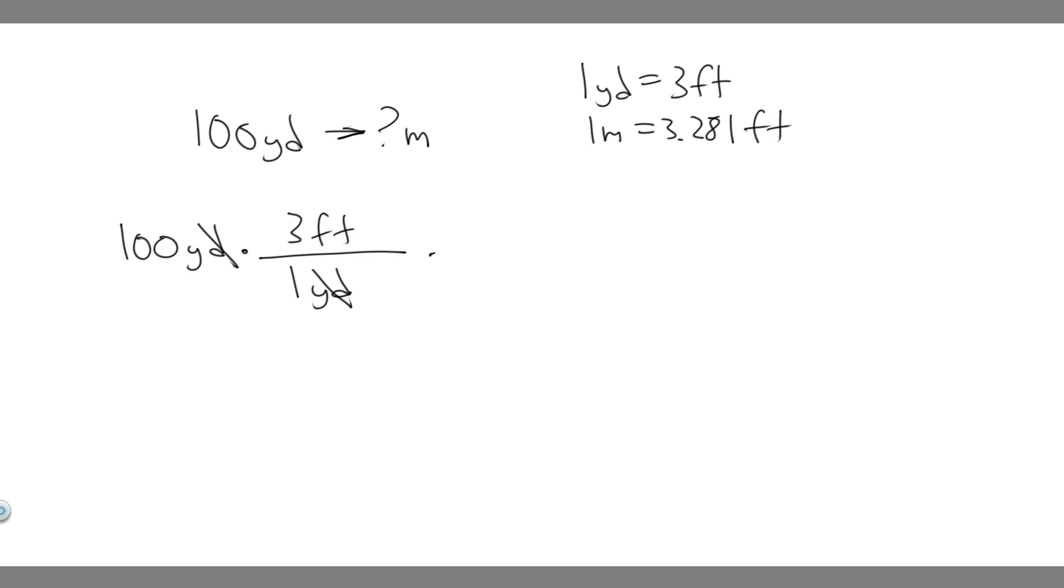But we don't want it in feet, we want it in meters. So now we'll convert from feet into meters. Feet is on top, so we'll write the conversion on the bottom: 3.218 feet. And then on top, that equals one meter. The feet will cancel, and now you have it in the correct units, which is meters.